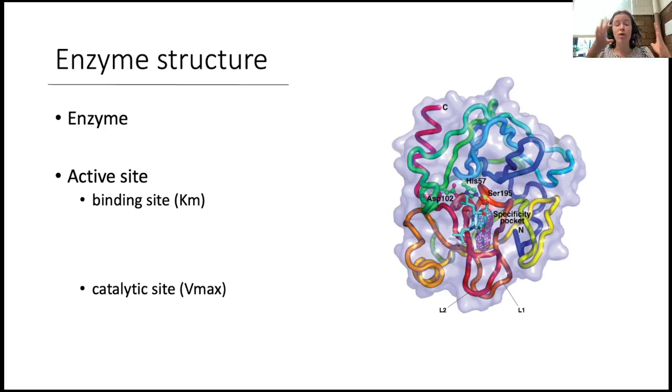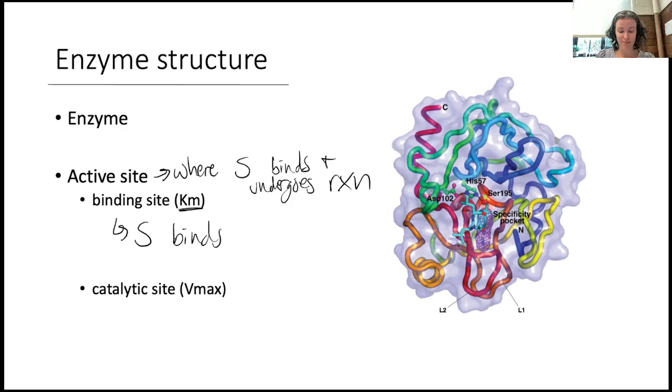Let's jump in, folks. Let's talk more specifically about enzyme structure. So within an enzyme is a region called the active site. This is where substrate binds and undergoes a reaction. Now within the active site there are kind of two sub-locations that are distinct from each other. There is the binding site, which is related to Km. This is where substrate binds. And then there's the catalytic site, which is related to Vmax. This is where the reaction happens. And so I want to point out, folks, that these are two distinct locations. The binding site is specific to Km, whereas the catalytic site is specific to Vmax.